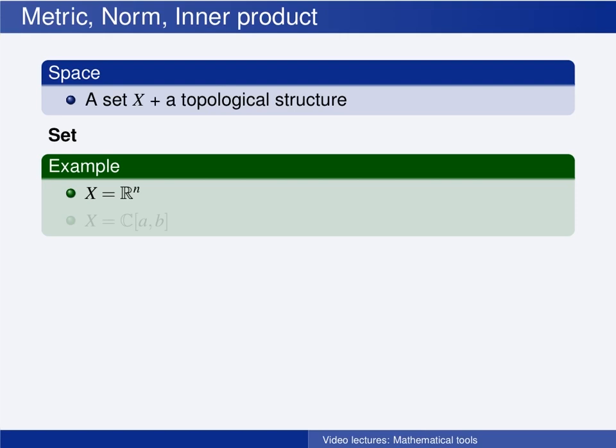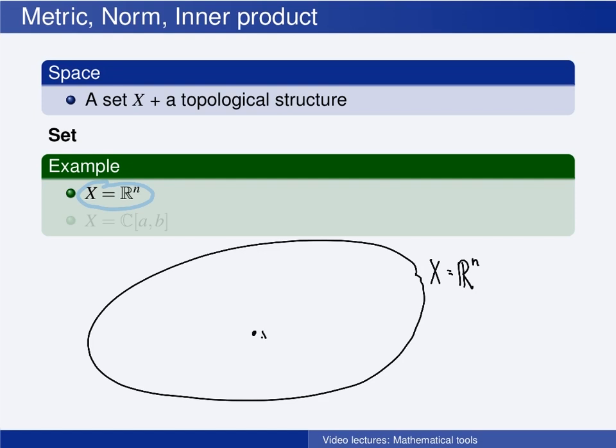be the set of all n-dimensional vectors with real-valued components. The elements in this set are vectors. So, each element is a vector that we may call X, that has n elements from X1 to Xn. And all these elements are real-valued, that means that each of these elements, Xi, are in the set of real numbers.